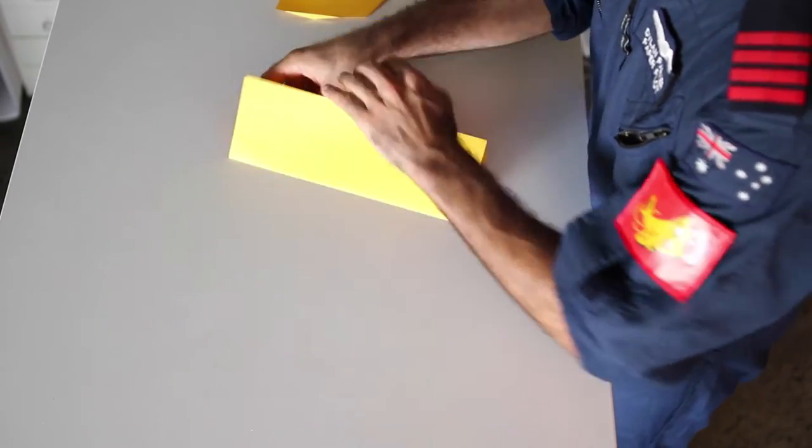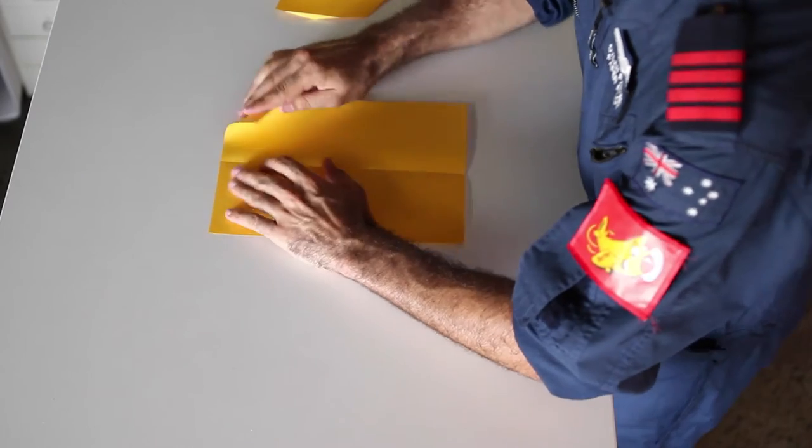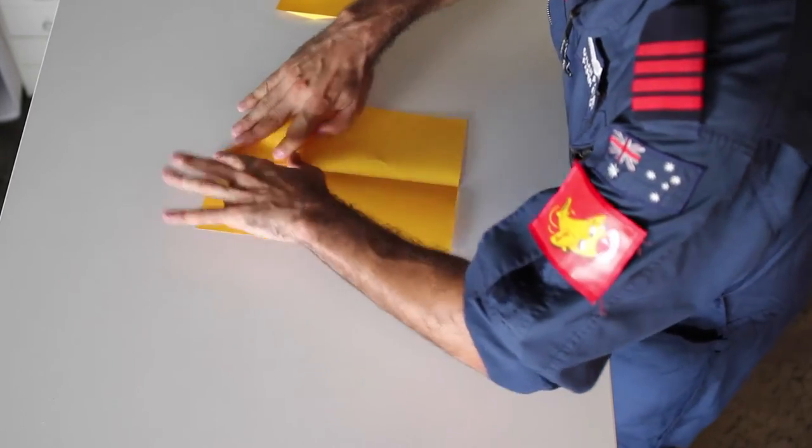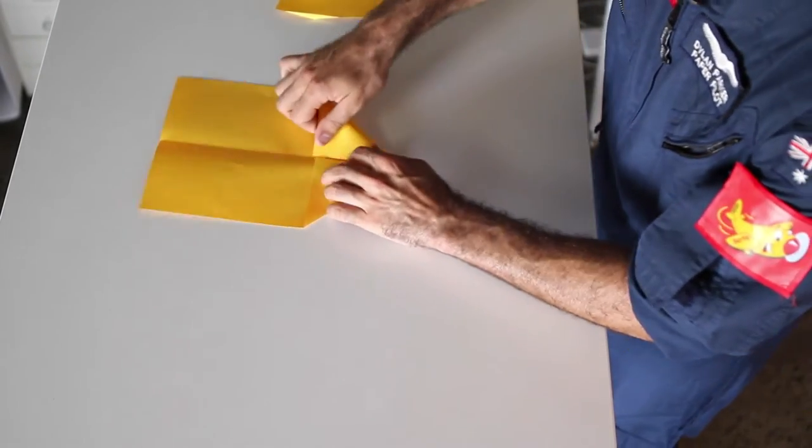Now just like many other paper planes, these next few steps you've probably done before. So fold the top corners in to make a bit of a house shape. See our house with our nice roof edge on either side.